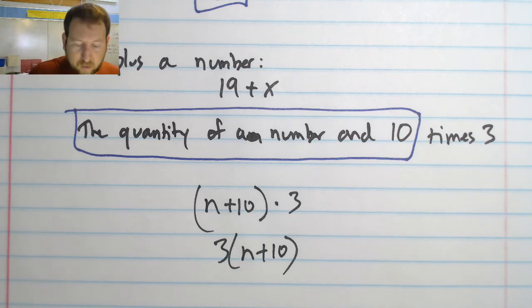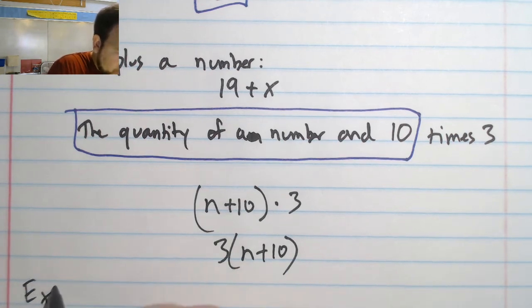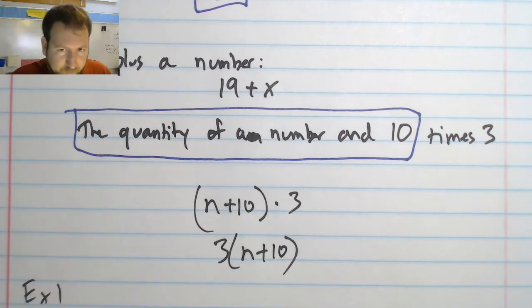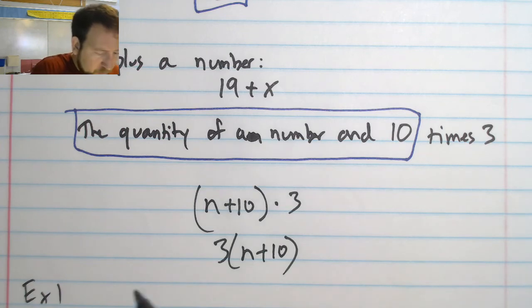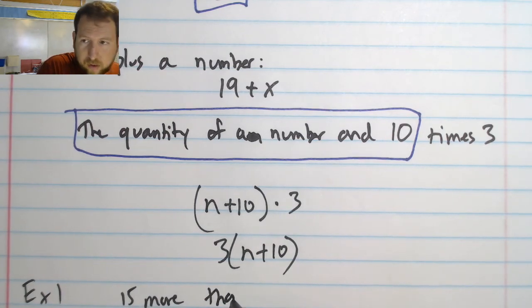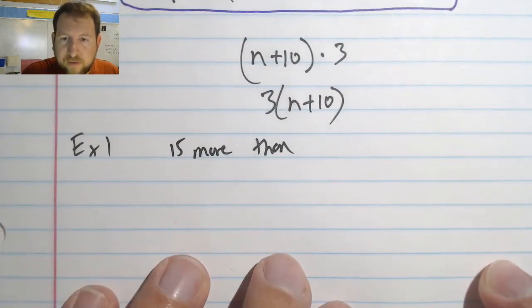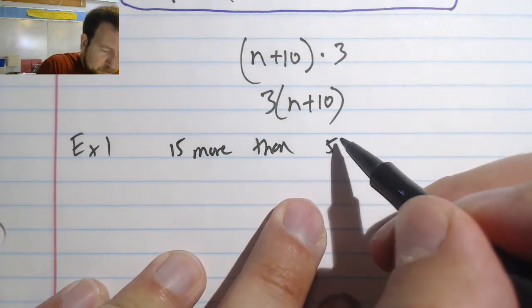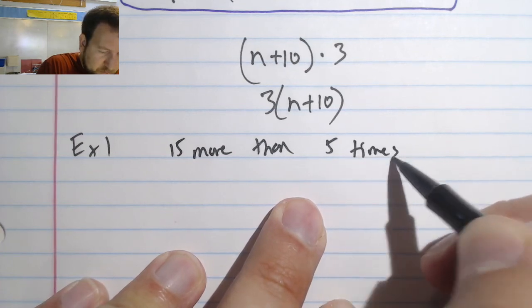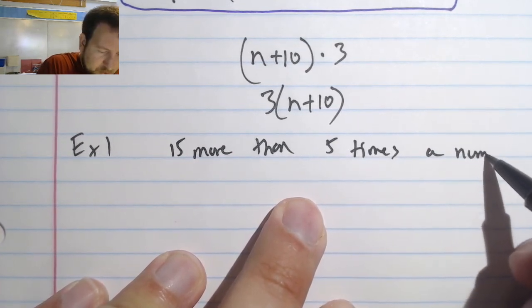Okay, one last one before we go. This will be example 1. Let's see. This is going to be 15 more than—let me write it so you guys can actually see it—15 more than 5 times a number.